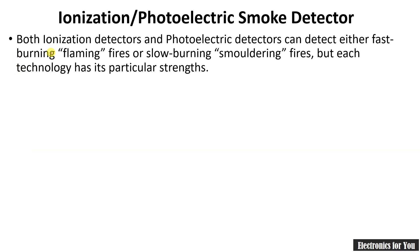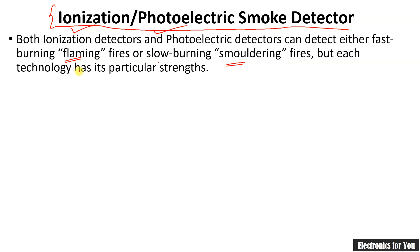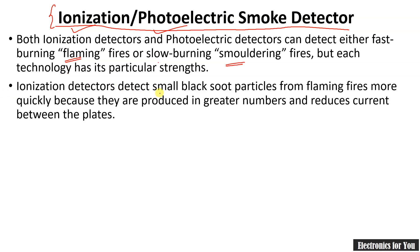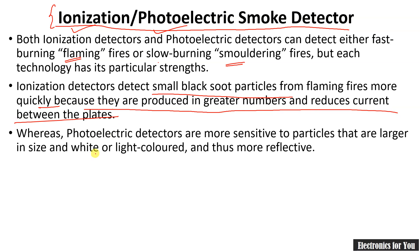The next type is the ionization-photoelectric smoke detector, which is a combination of the ionization and photoelectric smoke detectors. The ionization smoke detector can detect flaming fires, whereas the photoelectric detector can detect smoldering fires — so each has its own strengths and weaknesses. The ionization detector detects small dark smoke particles from flaming fires quickly, as they are produced in greater numbers and reduce the current between the plates.